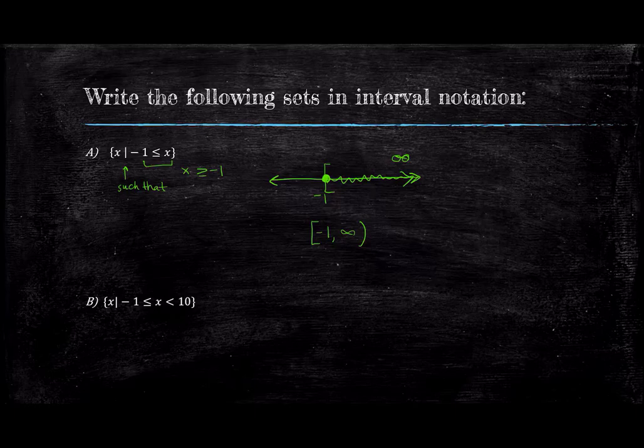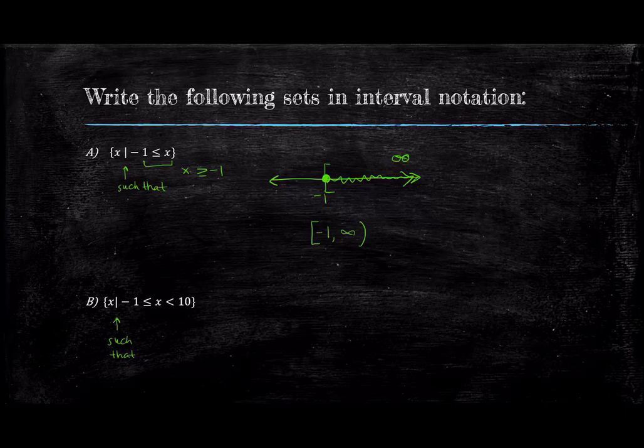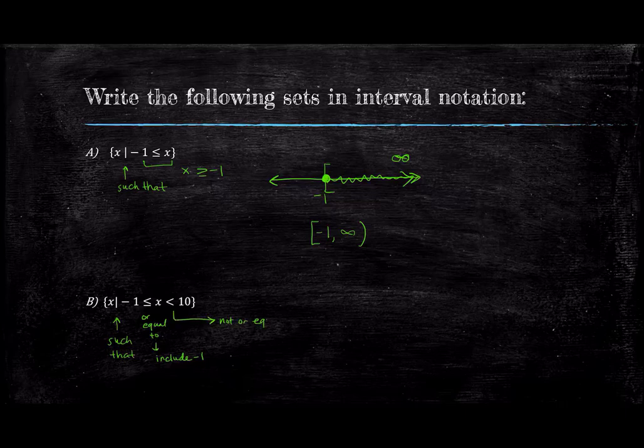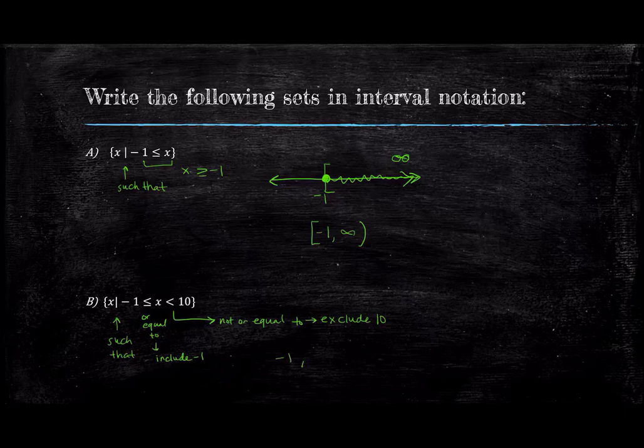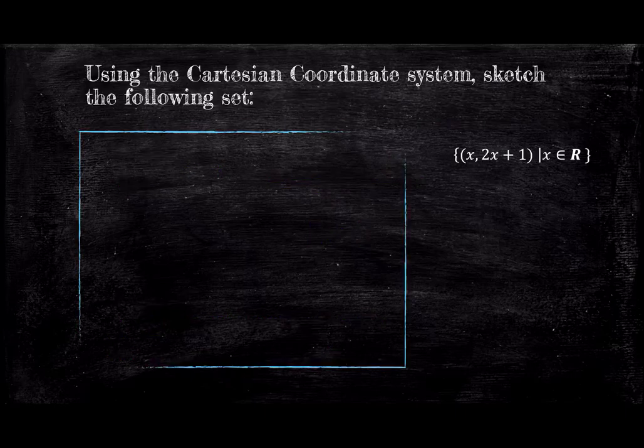For our set in problem B, let's try without the number line. We see we are looking at all x values such that x is a real number between negative 1 and 10 with the negative 1 included because of the or equals to sign and the 10 not included. We use the notation square bracket negative 1 comma 10 parentheses.